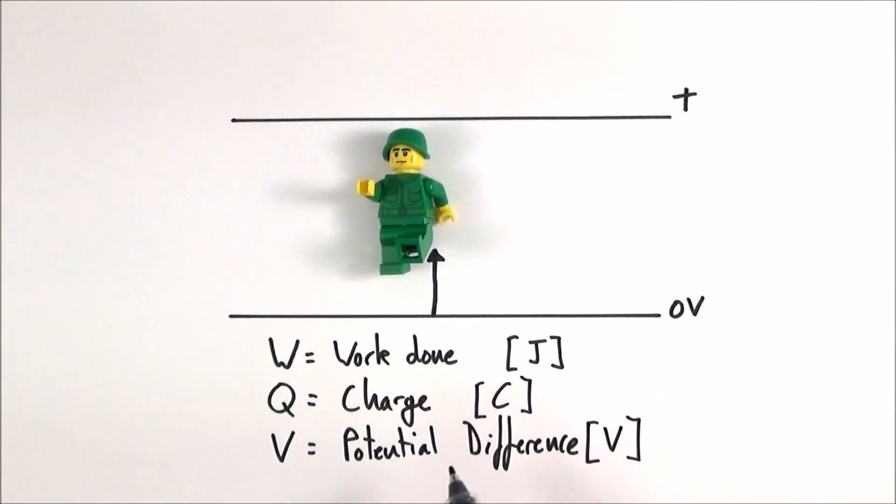And the important thing to note is that potential difference has a symbol V and potential difference also has the unit V as well.